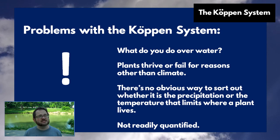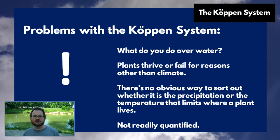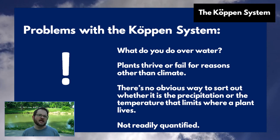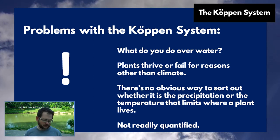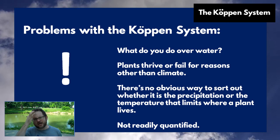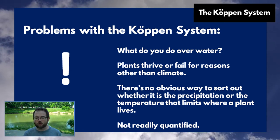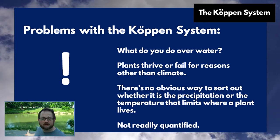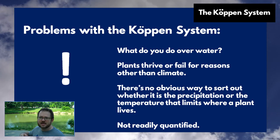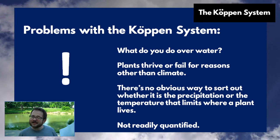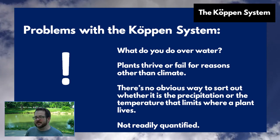Plants can thrive or fail for reasons that don't have anything to do with climate — invasive species might take over, there might be fires, insect damage, and so on — which might change why a plant can or can't live in a particular region. There's also no easy way to use the Köppen system to sort out why a plant doesn't live somewhere.